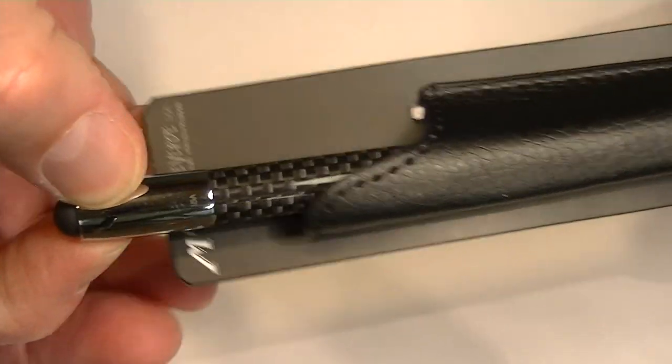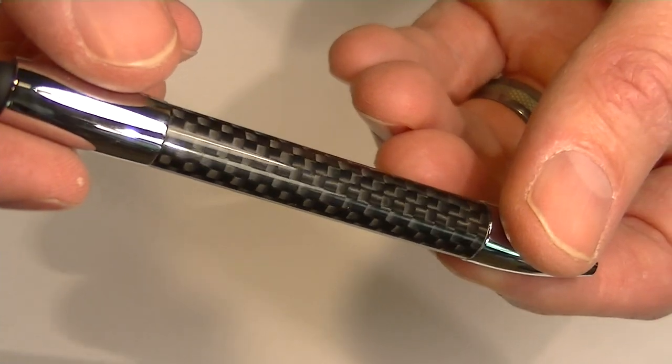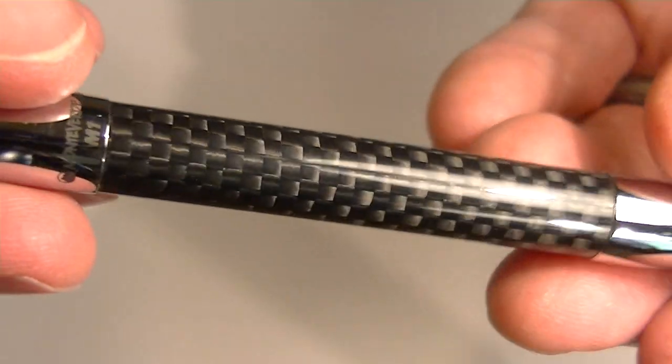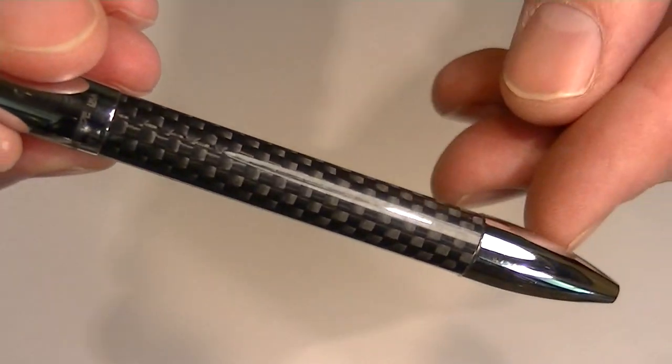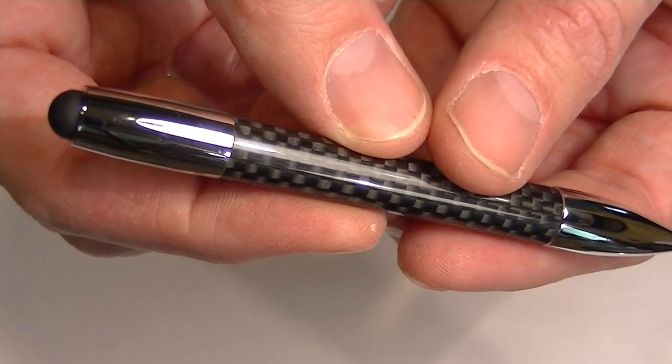Inside we have the Monte Verde M1 Stylus Ballpoint Pen. This pen has a carbon fiber barrel. It's a nice black carbon fiber, sharp looking pen with different color accents. This is the chrome version of the pen so it has chrome or silver accents.